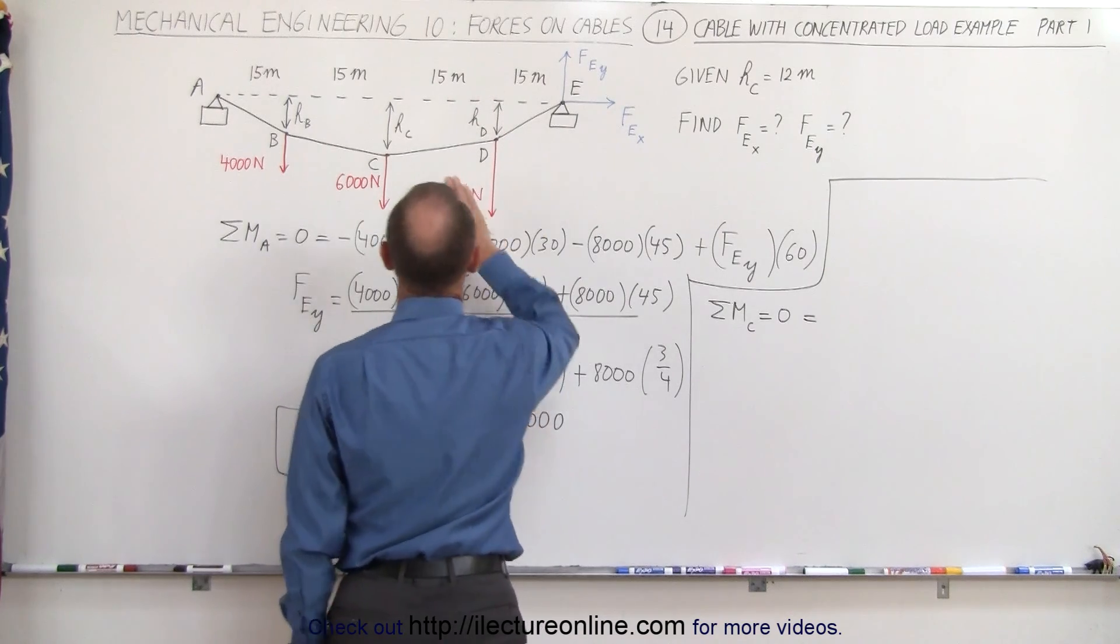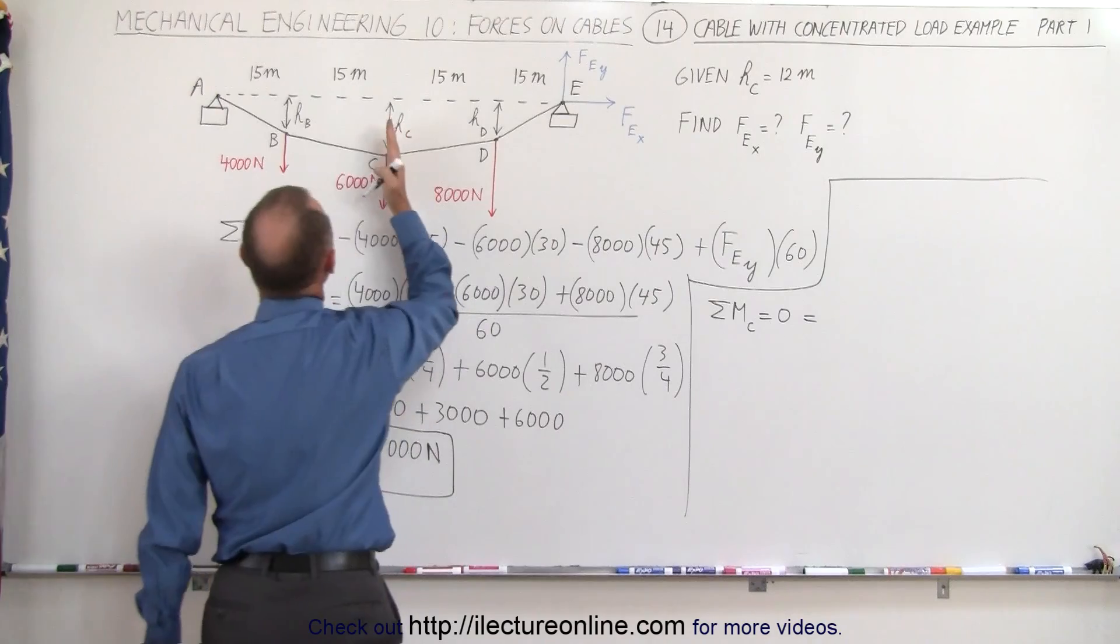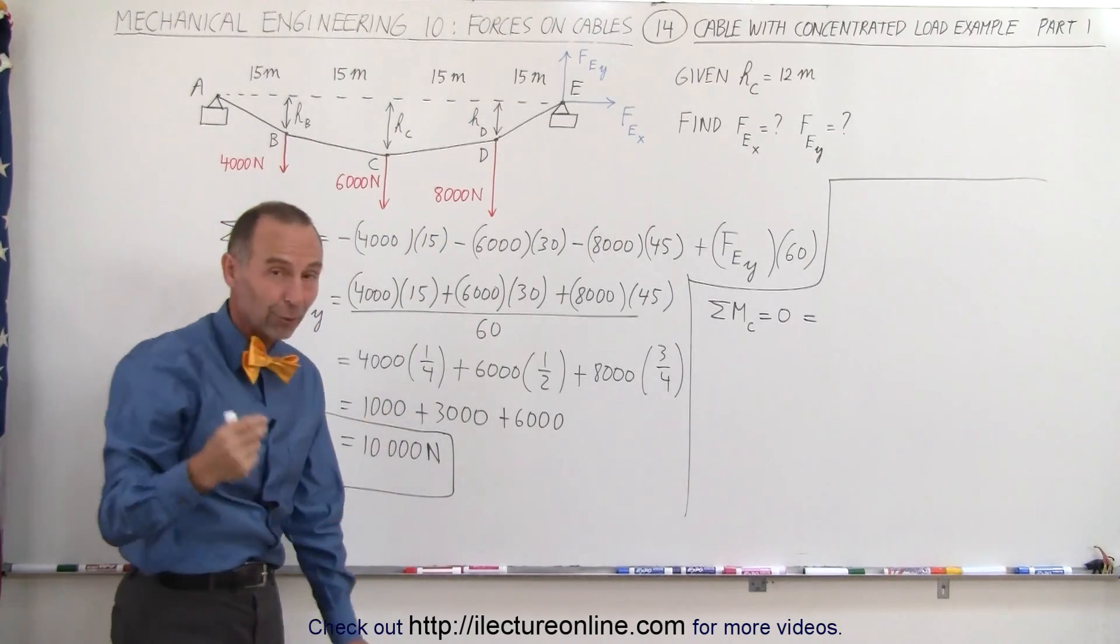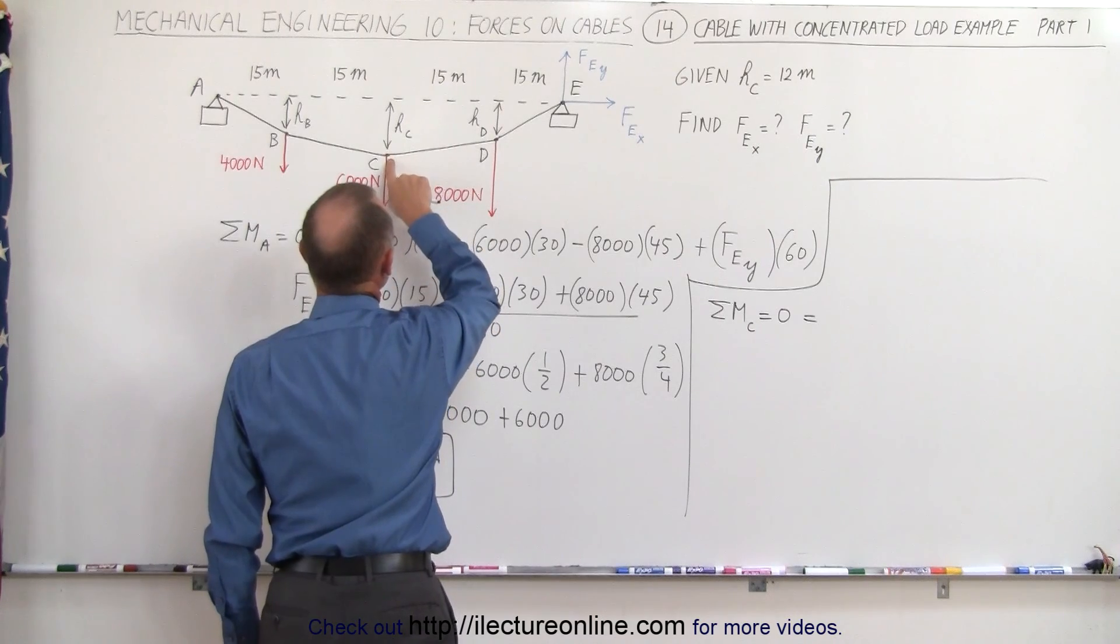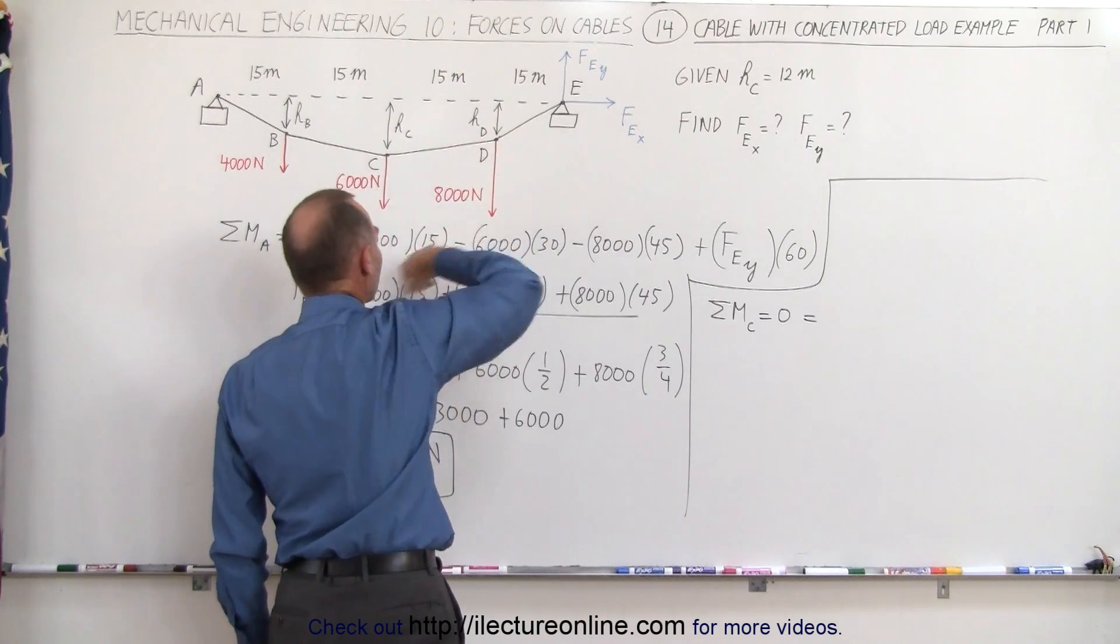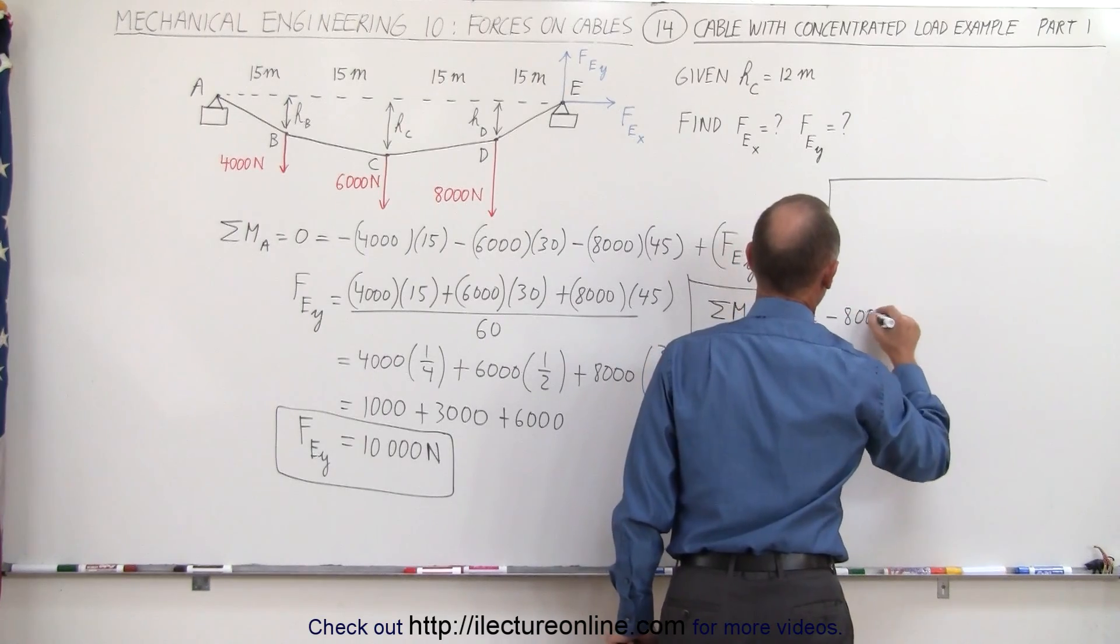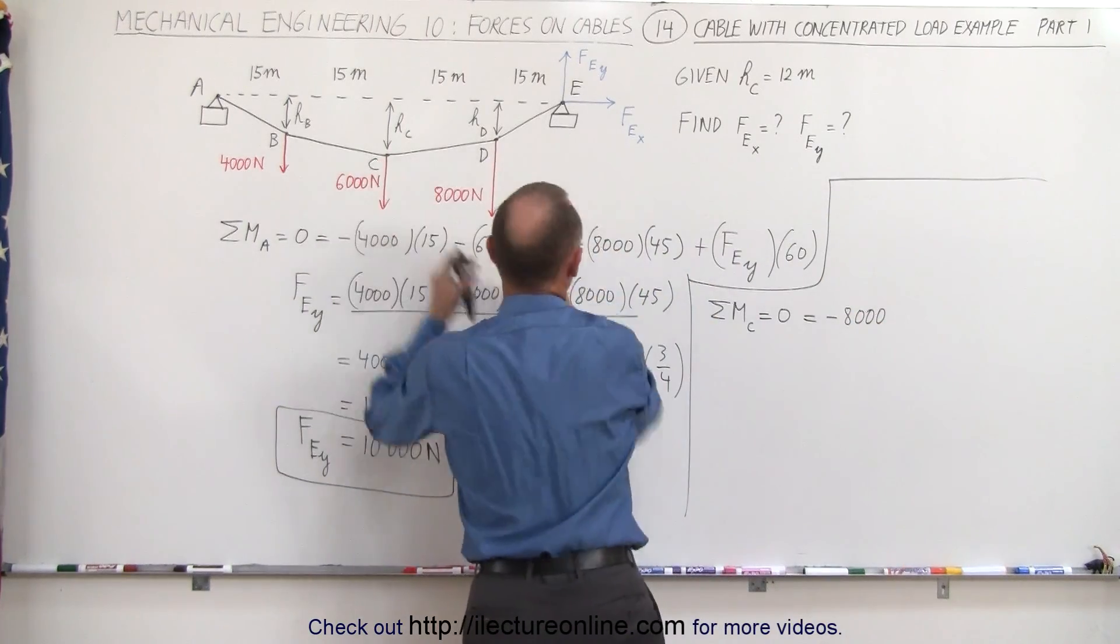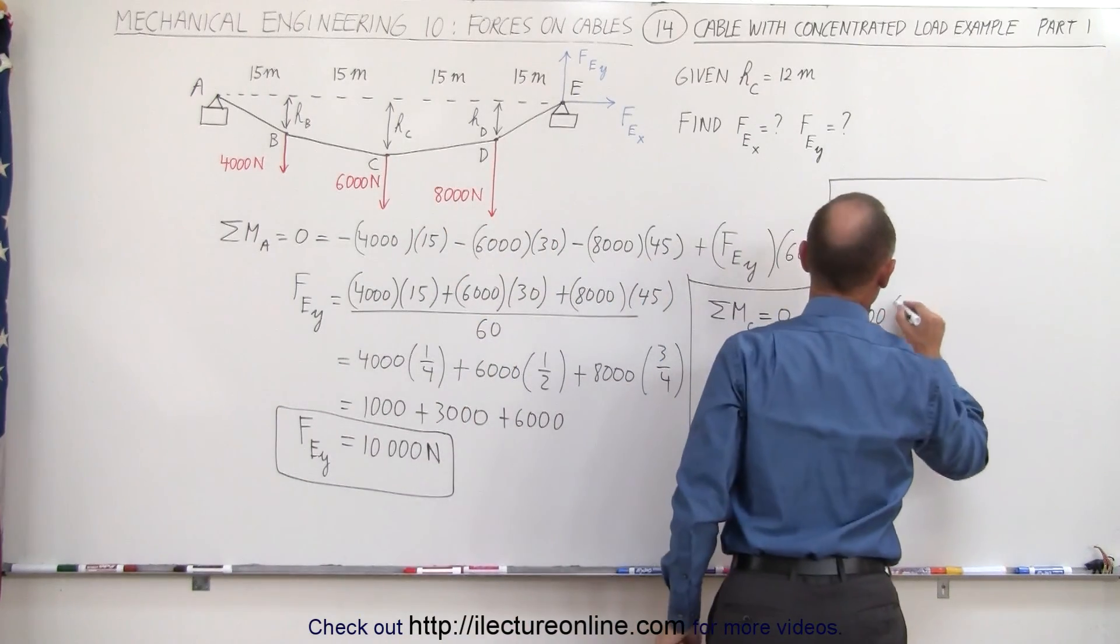Here we have the 8,000 newton force, so we're only going to consider this part of the cable. We're going to ignore that part of the cable. With cables, we're able to do that, which is great. So from this point, we look at this point that gives us a clockwise moment. That means minus 8,000, and the distance would be 15 meters.